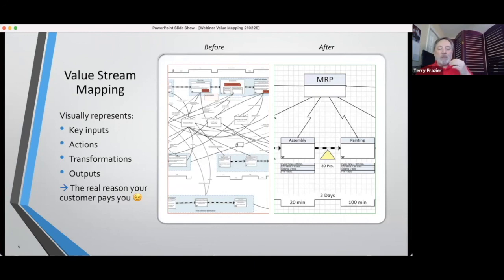What we try to do here is to represent the key inputs across the chain, the key transformations and actions that actually deliver value to the customer—the real reason the customer pays you—as well as the specific outputs that drive that.